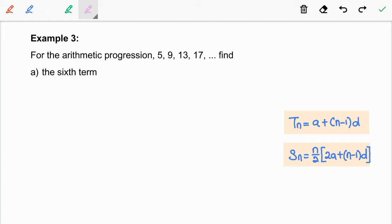In this video, we are going to discuss Example 3. For the arithmetic progression 5, 9, 13 and 17, find question A, the sixth term.